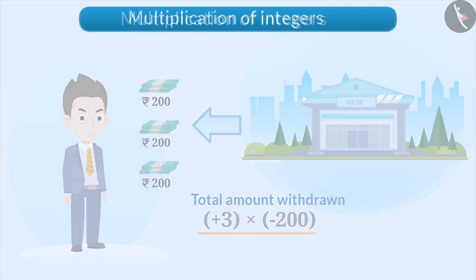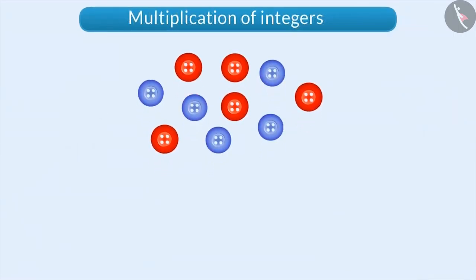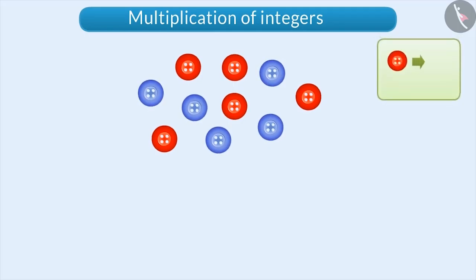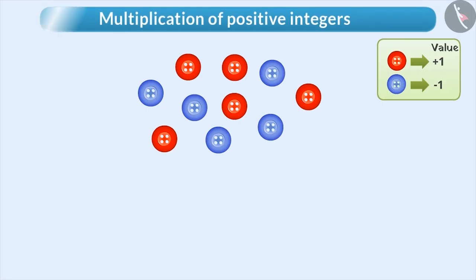Let's learn the multiplication of integers in a fun way. There are two types of buttons here — one is red and the other one is blue. Let's assume the value of the red button as positive 1 and the value of the blue button as negative 1. Using these buttons, let's understand multiplication of two positive integers.